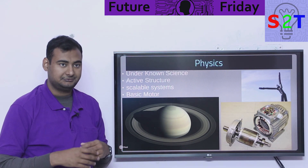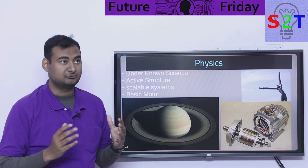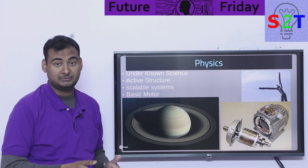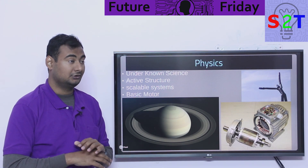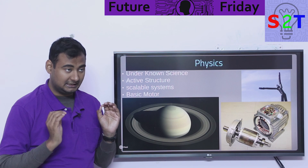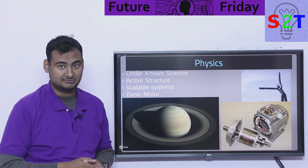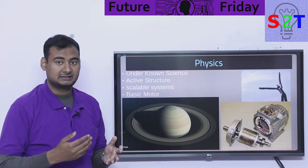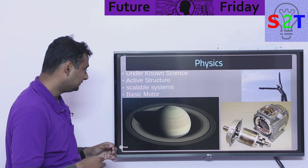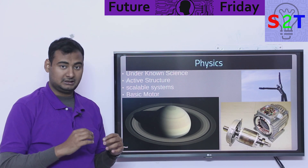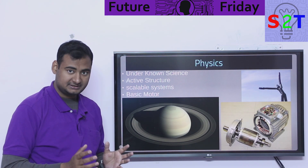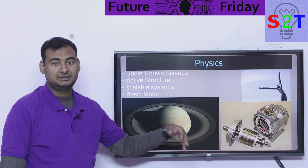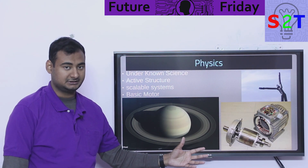This idea is very scalable. If you want to make it for Mars, you can. For the Moon, you can. For Earth, you can. Even for a star it's possible, as long as you have materials that can withstand the temperature. In principle, the physics works like an induction motor — basically a contact lens magnet transmission.